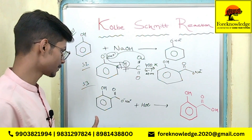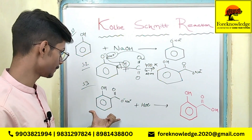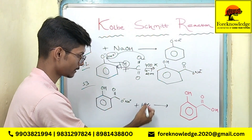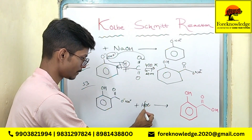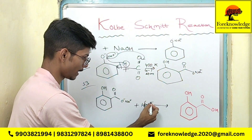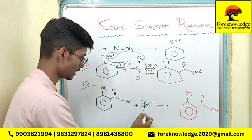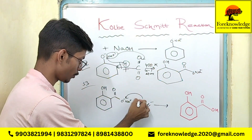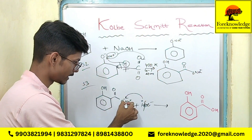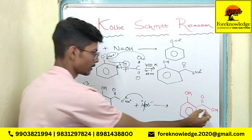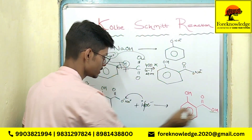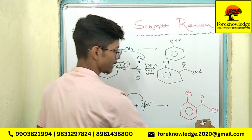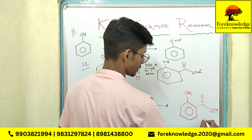In step 3, sodium salicylate will react with HCl and it will break into Cl⁻ and H⁺. H⁺ will react with the negative charge and you will get OH, and Na will react with Cl and give you NaCl as a byproduct.